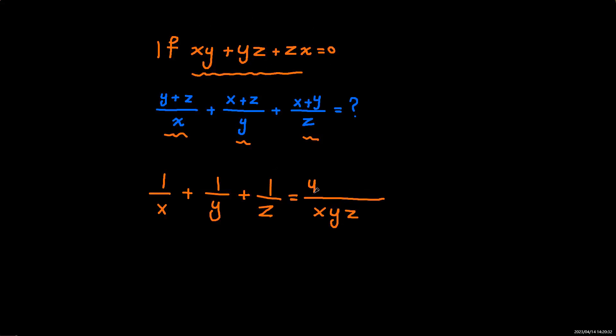It will be yz plus xz and plus xy. So all of this will be this. So this will be 0. So that means all of this is 0.